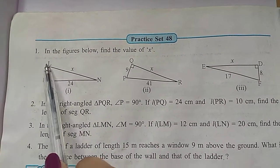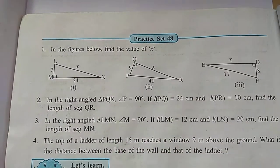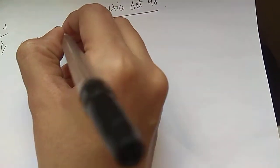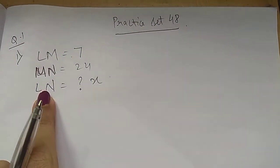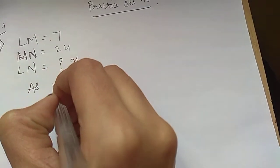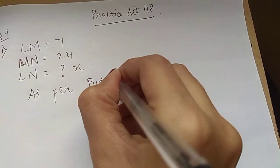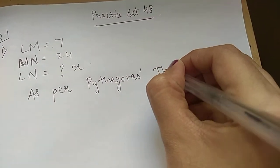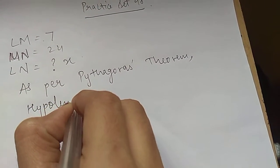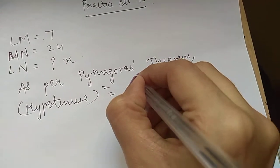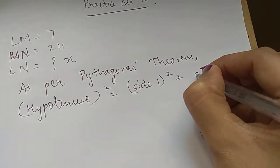LM is 7, MN is 24, and the hypotenuse LN is x. Let's write what all are given: LM is 7, MN is 24, and LN we have to find, that is x. Now LN is the hypotenuse. So as per Pythagoras theorem, we have to apply that.